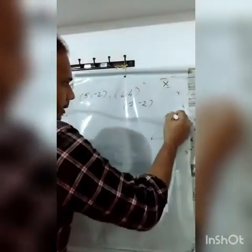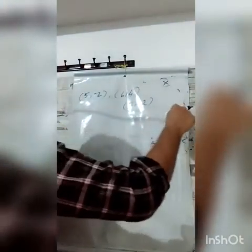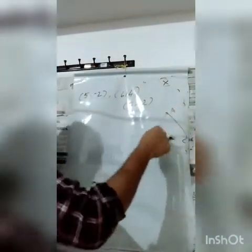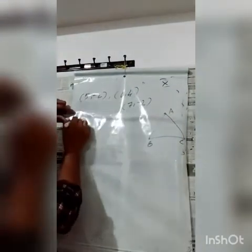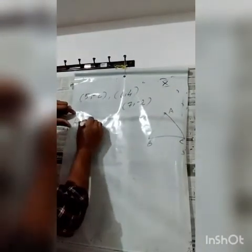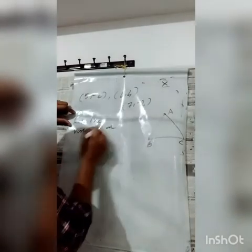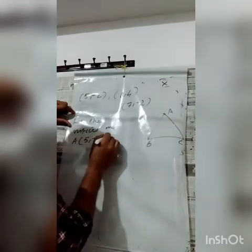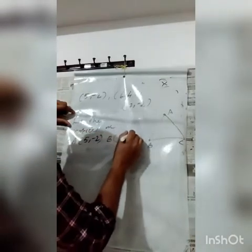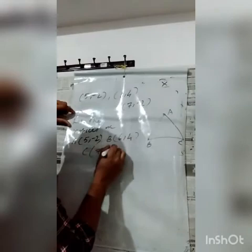Here, let A = (5, -2), B = (6, 4), and C = (7, -2).